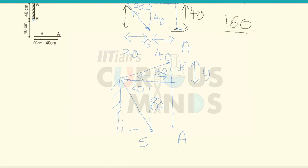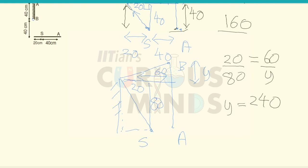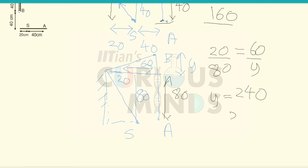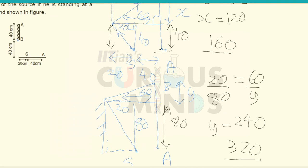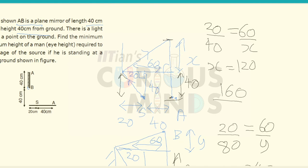I will use the same formula: 20 divided by 80 will be equal to 60 divided by Y. So Y will be equal to 240. The total height from the ground — this height is 80 — so 80 plus 240 will be equal to 320 centimeters. The minimum height required is 160 and the maximum height required to see the source is 320 centimeters. Everything is in centimeters.